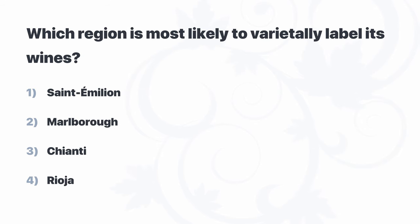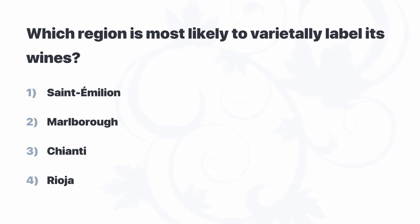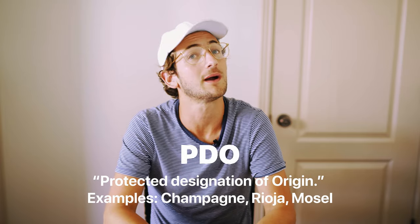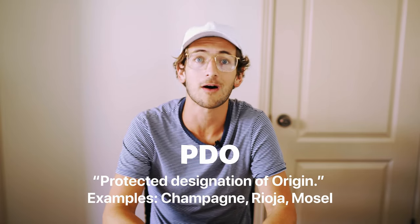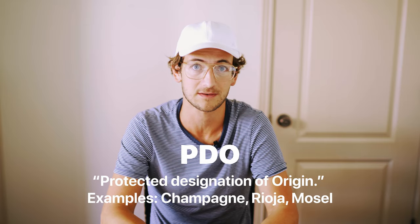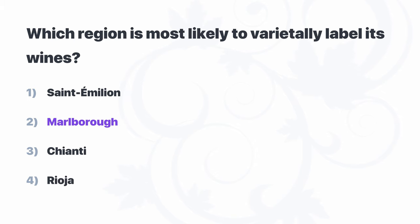Which region is most likely to varietally label its wines? Saint-Émilion, Marlborough, Chianti, or Rioja? The PDO system in Europe defines not only where a wine comes from but how it's made, and that often includes which varieties can be used — so a PDO tells you the variety if you know what to look for. With New World wines, it's very common to indicate the variety. Saint-Émilion, Chianti, and Rioja are all Old World regions, so we're left with Marlborough as our correct answer.